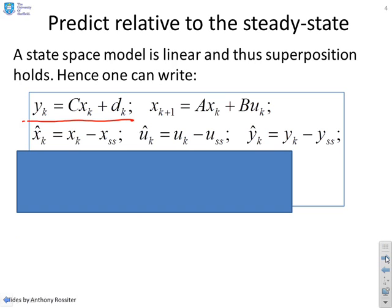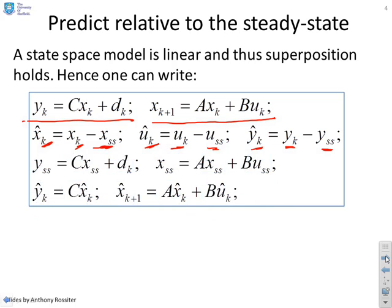And I'm now going to define some deviation variables which are the distance from my desired steady-state. You see I've got X hat equals X minus X_SS, U hat equals U minus U_SS, Y hat equals Y minus Y_SS. I know that if I'm at steady-state, the following equations must hold.